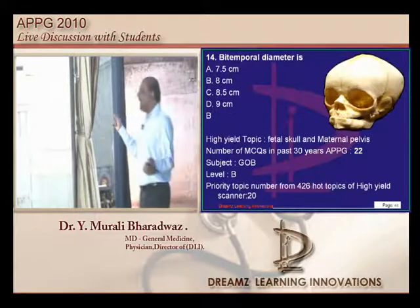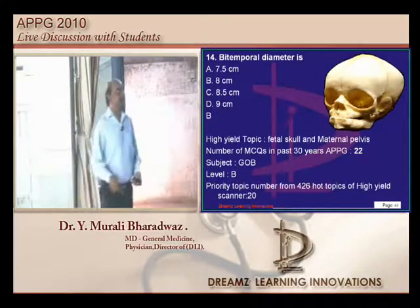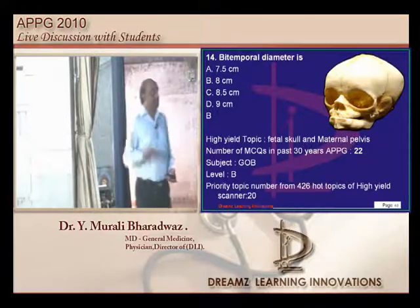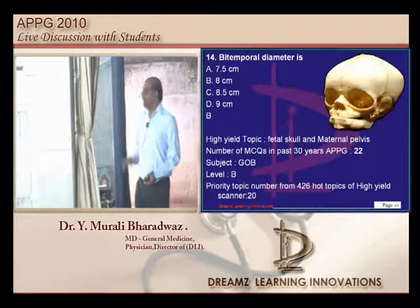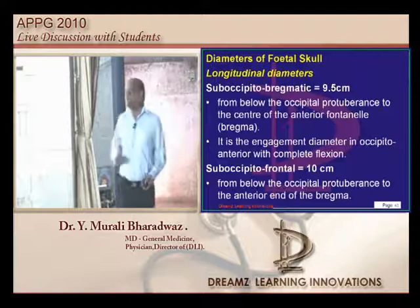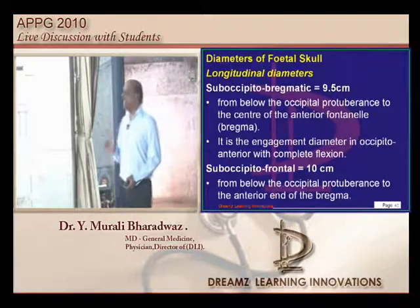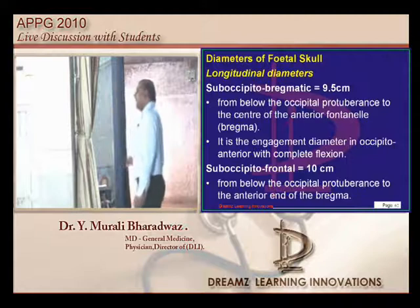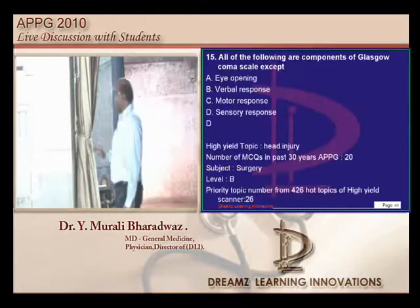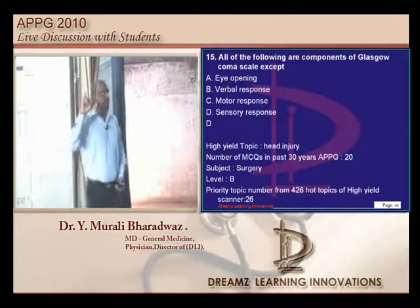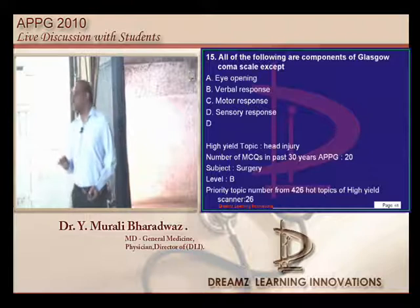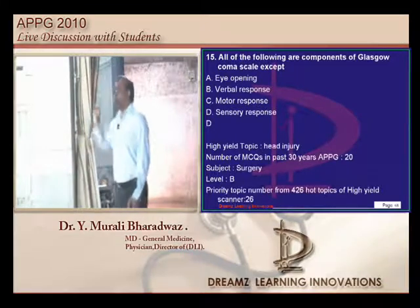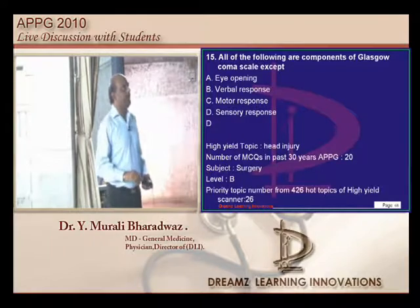What is bi-temporal diameter? Bi-parietal is 9.5 cm, bi-temporal is 8 cm, and bi-mastoid is 7.5 cm — these need to be remembered. The Glasgow Coma Scale includes eye opening, verbal response, and motor response. The minimum score is 3.